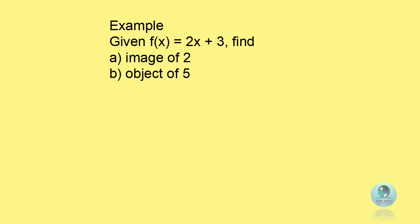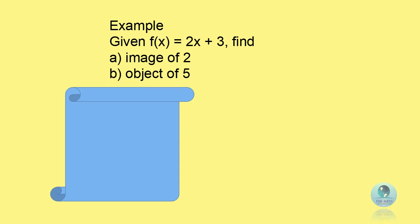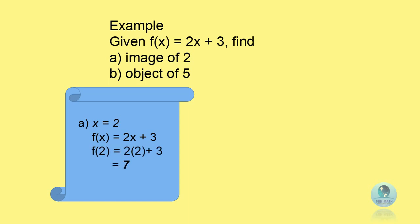Now, let's look at this example. Given f(x) equals to 2x plus 3, find the image of 2 and the object of 5. To answer this question, you need to understand the concept of image and object. The first question: find the image of 2. The question asks you to find the image, therefore 2 is your object. You need to substitute 2 in x. F(2) equals to 2 times 2 plus 3. Therefore, you get the answer 7.